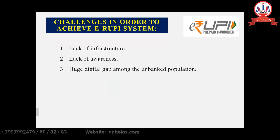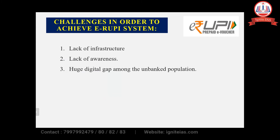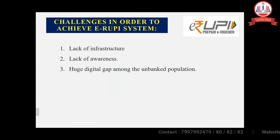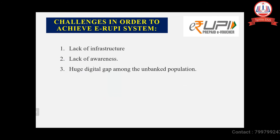Let us see some challenges in achieving the E-Rupee system. According to the Telecom Regulatory Authority of India (TRAI) report, internet penetration in rural India was only 33%, compared to 99% in urban India. This shows we are still lacking in the digitalization of rural India due to lack of infrastructure and awareness. There is also a huge digital gap among the unbanked population.